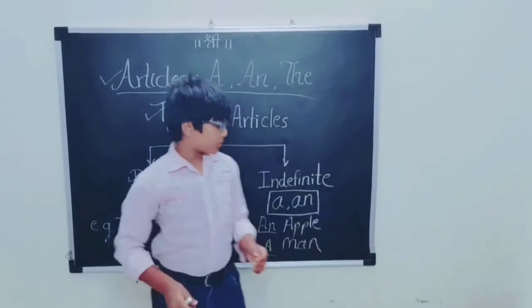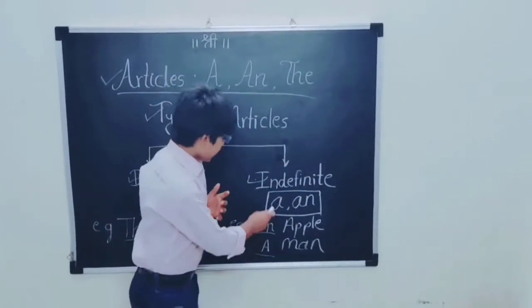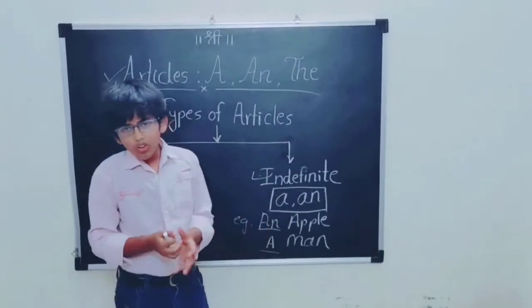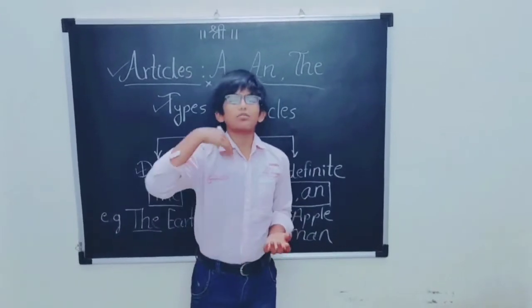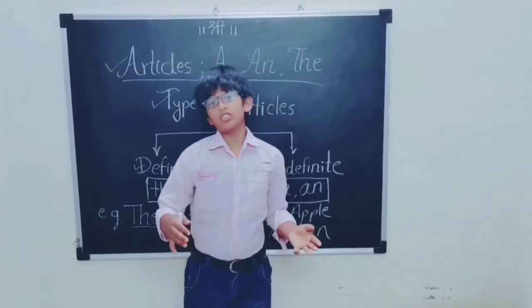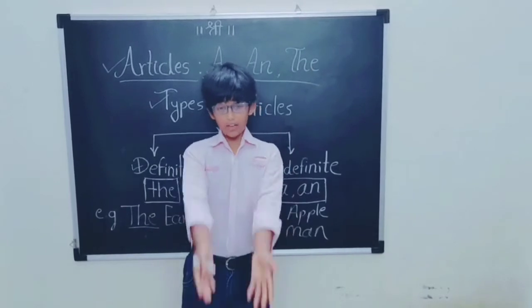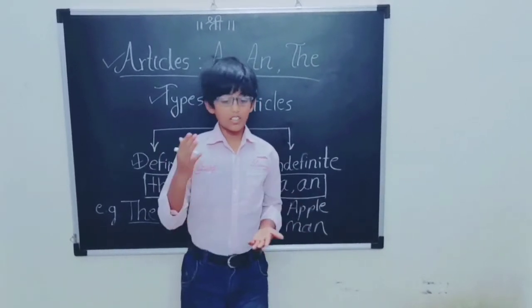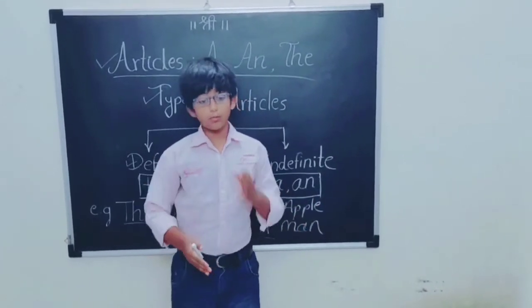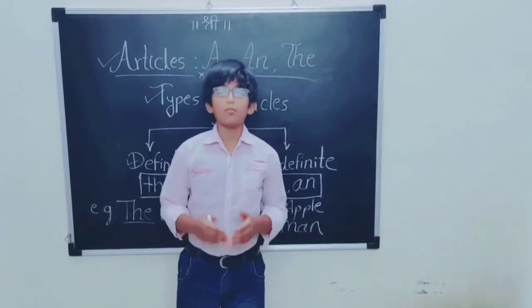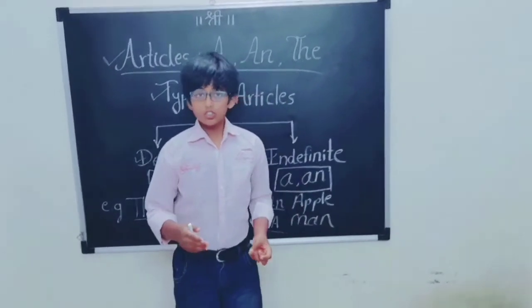Now we learn about indefinite articles. Indefinite articles consist of 'a' and 'an.' We use 'a' and 'an' when we are talking about something in general — we are not specifying. For example, there are a lot of books and we just need any one book — 'give me a book' — we are not specifying a particular book. We are talking in general about just one of many.